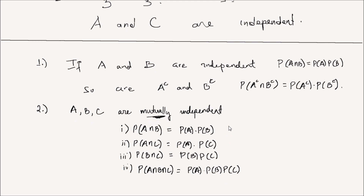The first three conditions imply pairwise independence. As the name suggests, pairwise means A is independent of B, B is independent of C, and A is independent of C.